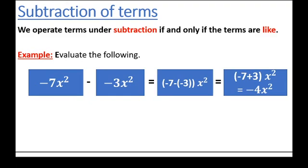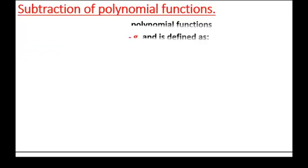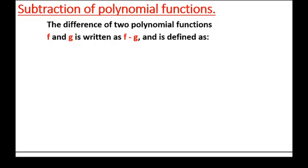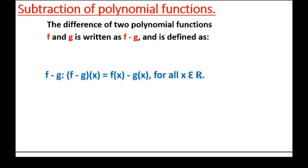Now that you can add and subtract polynomial terms, let's define the subtraction of polynomial functions formally. The difference of two polynomial functions f and g is written as f minus g, and is defined such that f minus g of x equals f of x minus g of x, for all x from the set of real numbers. The polynomial functions we consider at this level are polynomial functions over the set of real numbers.